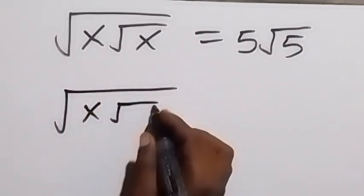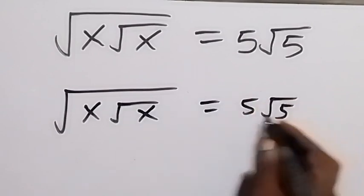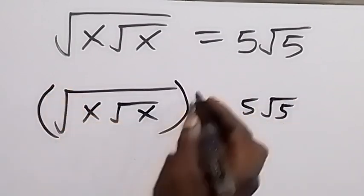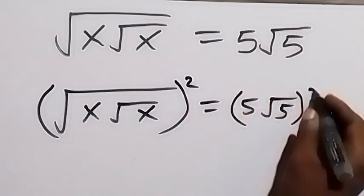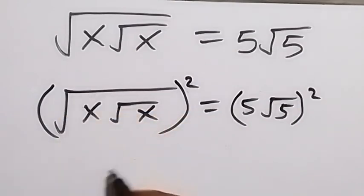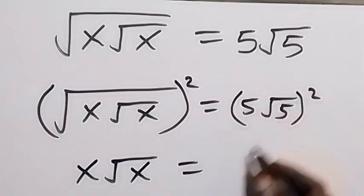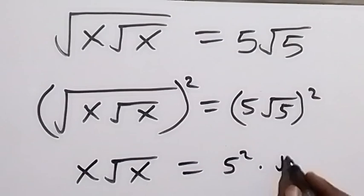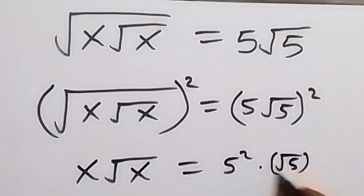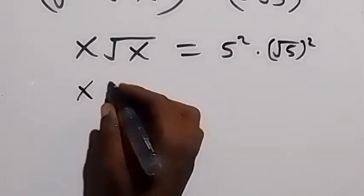We have square root of x root x which is equal to 5 root 5. When we take the square on both sides, we square this side and also we square this side. The square will cancel the square root and we have x root x left here. This square will affect these two numbers and we have 5 squared multiplied by root 5 squared.